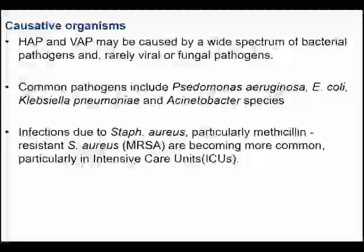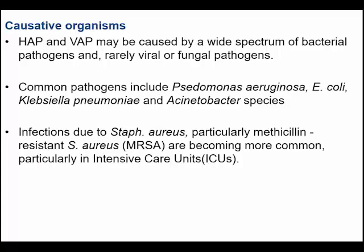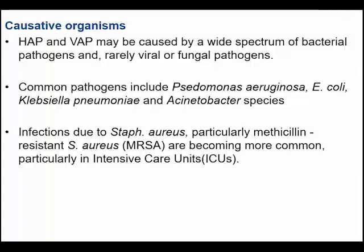Causative organisms for hospital-acquired pneumonia and ventilator-acquired pneumonia may include a wide spectrum of bacterial pathogens and rarely viral pathogens. The most common pathogens include Pseudomonas aeruginosa, E. coli, Klebsiella pneumoniae, and Acinetobacter species. Infections due to Staphylococcus aureus — particularly methicillin-resistant Staphylococcus aureus (MRSA) — are becoming more common, especially in ICU settings.